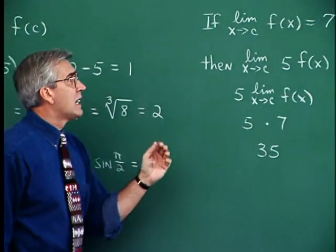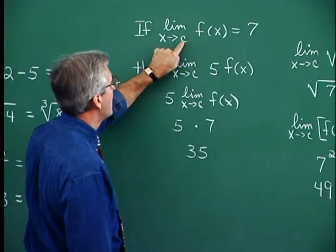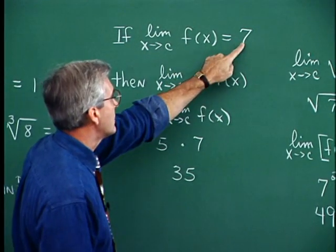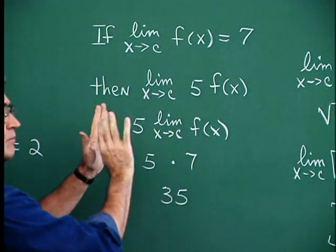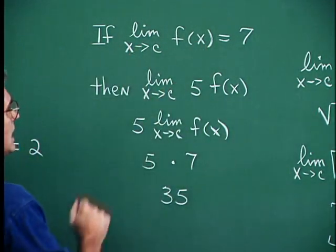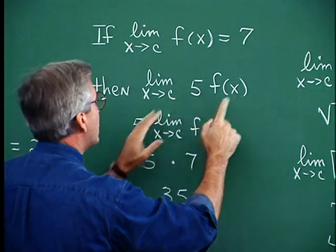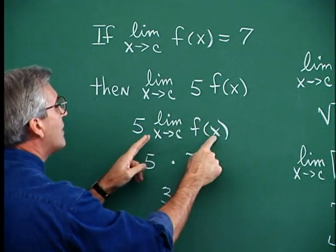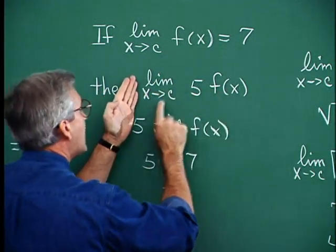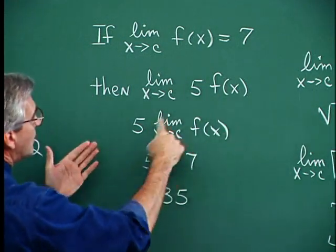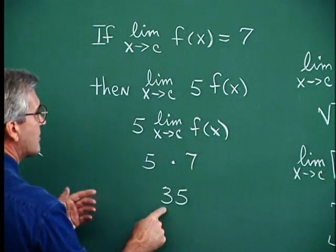Let's look at some others that are rather intuitive. Suppose we know that the limit as x approaches some target of our function is 7 — that's given. Now let's perform operations on this situation. The limit as x approaches c of 5 times f of x: think of this as 5 times the limit of f of x. The limit of f of x is 7, so 5 times 7 is 35. Similarly, the square root of f of x gives the square root of 7, and f of x squared gives 7 squared, or 49.